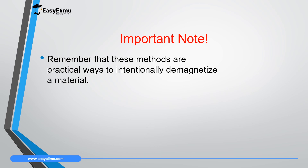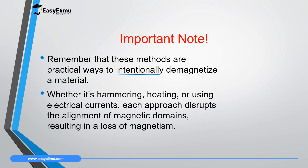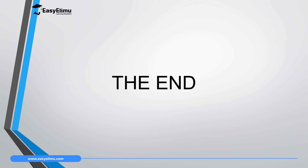It is important to note that these methods — hammering, heating, and using alternating current — are practical ways of intentionally demagnetizing a material; they cannot take place naturally. Each approach disrupts the alignment of magnetic domains, causing demagnetization. That marks the end of today's lesson. In the next lesson we will discuss hard and soft magnetic materials and their practical applications.